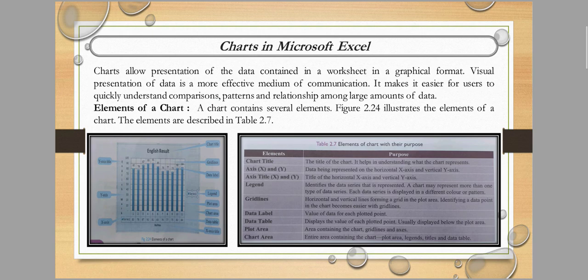X axis title is the title of the horizontal axis, and Y axis title is the title of the vertical axis — same concept as the chart title. Next is the legend, which identifies the data series represented in the chart. A chart may represent more than one type of data series.